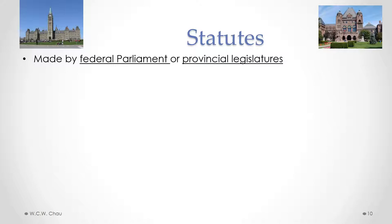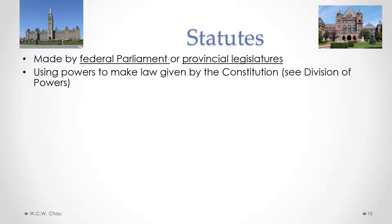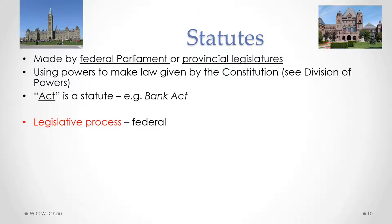Statutes are laws made by either the federal parliament in Ottawa or a provincial legislature. The provincial legislature for Ontario is located at Queen's Park in Toronto. Parliament and provincial legislatures exercise the lawmaking powers given to them under the constitution in the division of powers. Any statute will have the word 'Act' at the end — for example, the federal parliament created the Bank Act, which governs banking in Canada. The process of creating a statute is a long and complicated one, and we will have a simplified overview of the federal legislative process.